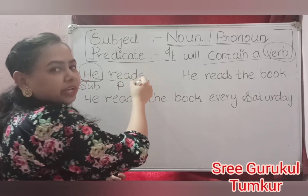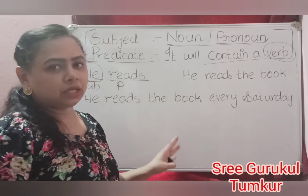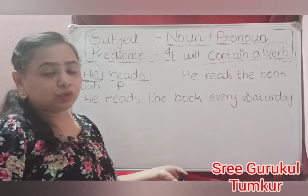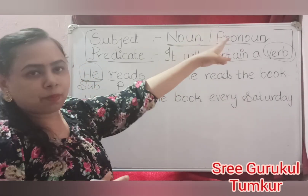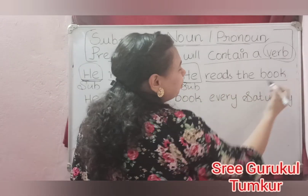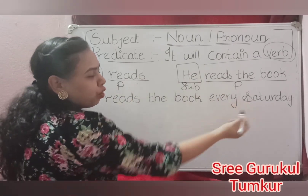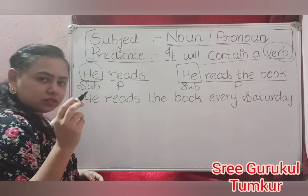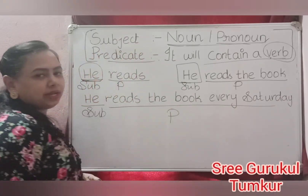This is the very simple form, and here is a somewhat extended form: 'He reads the book.' Here also, without any confusion, we write 'he' as the subject. You should not be confused about whether the subject is 'he' or not, because the simple rule is noun or pronoun. A pronoun is there, so without confusion 'he' is the subject and 'reads the book' is the predicate. Further extended: 'He reads the book every Saturday.' Here also, 'he' is the subject and 'reads the book every Saturday' is the predicate.